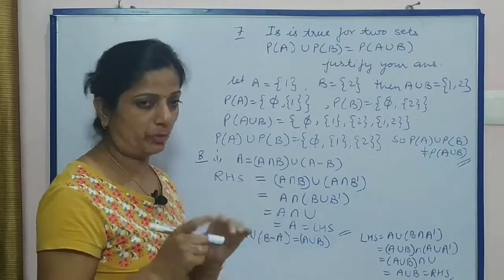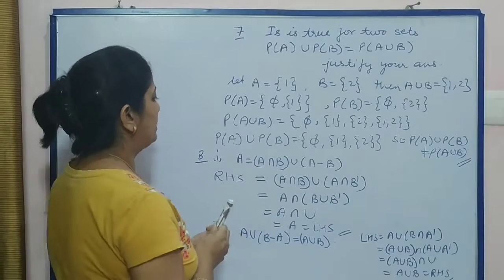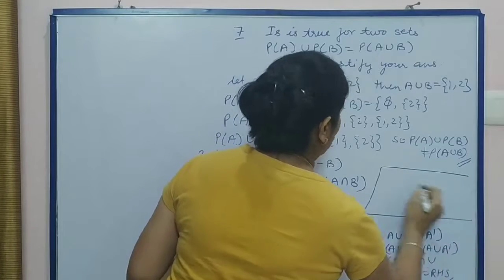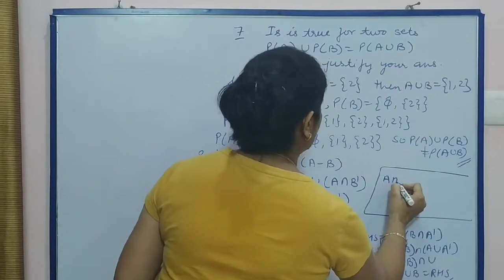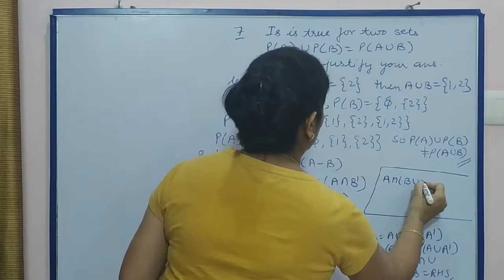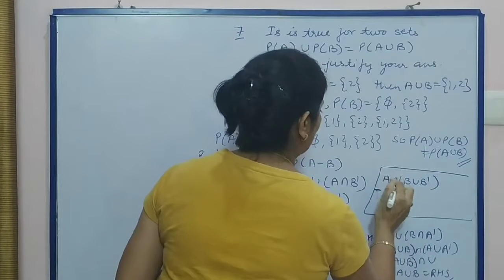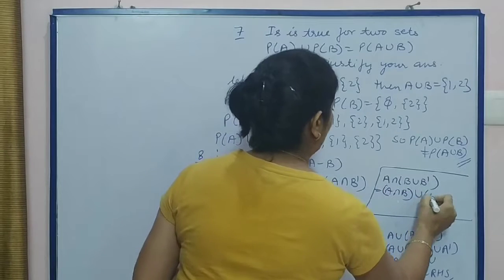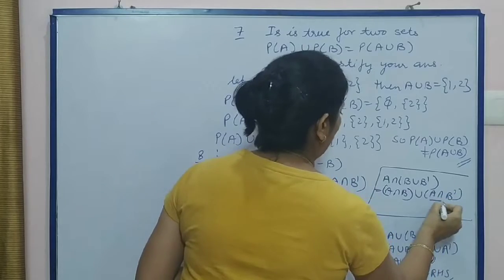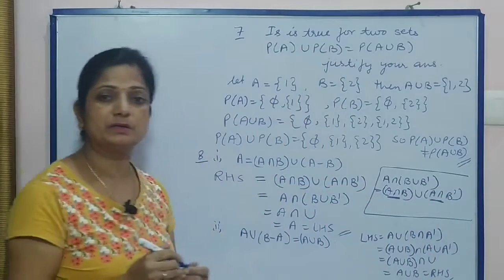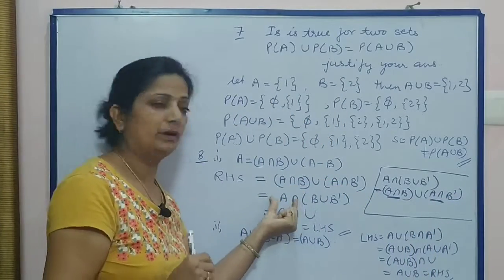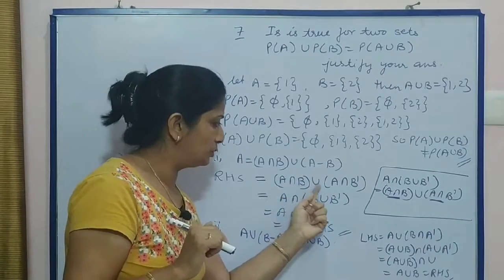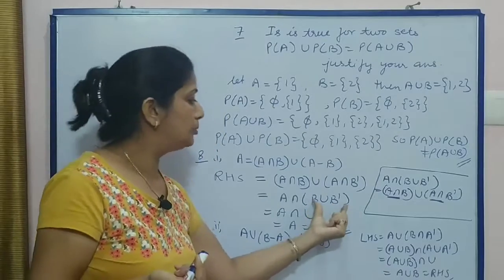Now, by reversing the distributive property - what is the distributive property? The distributive property is A intersection (B union B dash). We can write this as (A intersection B) union (A intersection B dash). So when the same term appears in both brackets, we take it outside. So A intersection (B union B complement). And B union B complement - when you take a set and its complement, their union is the complete universal set.